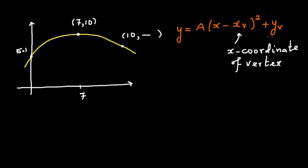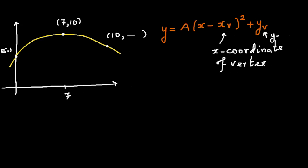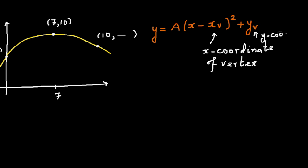If you know the vertex or the turning point you can use this formula and this is the y coordinate. So let me write it here, this is the x coordinate and this is y coordinate, y coordinate of the vertex.